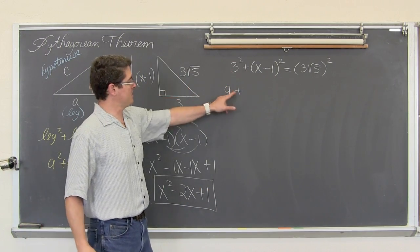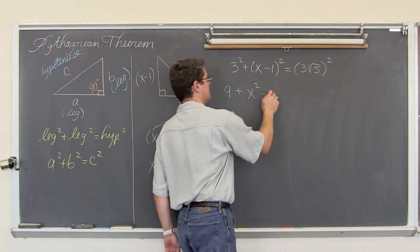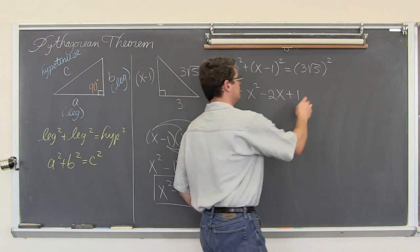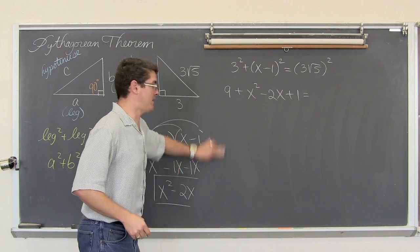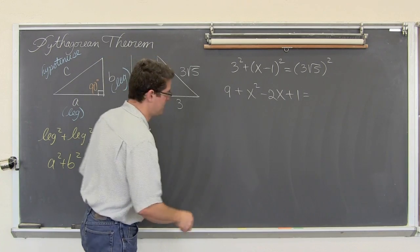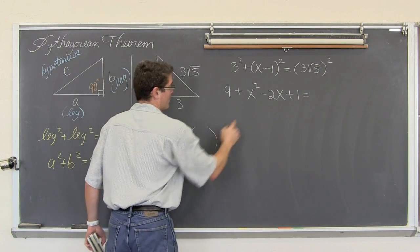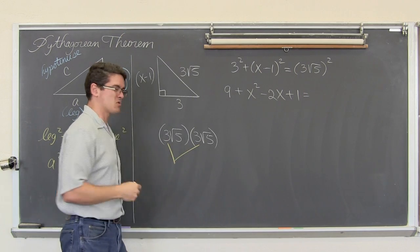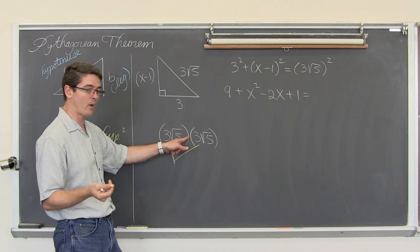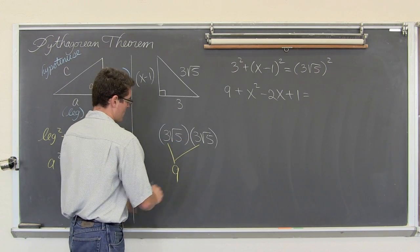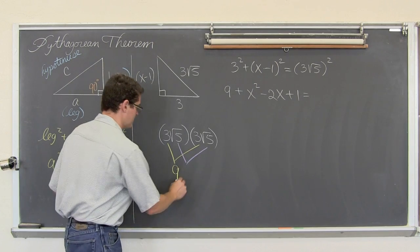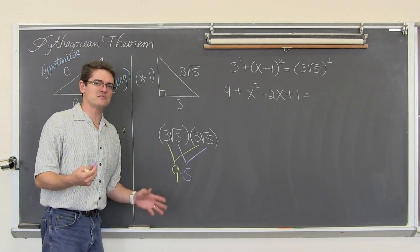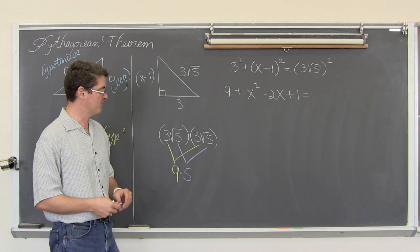So we have 9 plus x squared minus 2x plus 1. On the other side, how do you take 3 square root of 5 and square it? Well, when you multiply it by itself, you take the coefficient of the radical which is 3 and multiply them together because it is squared. So 3 times 3 is 9, and square root of 5 times square root of 5 is the square root of 25, which is 5. And all of this is being multiplied together, so 9 times 5 is equal to 45.